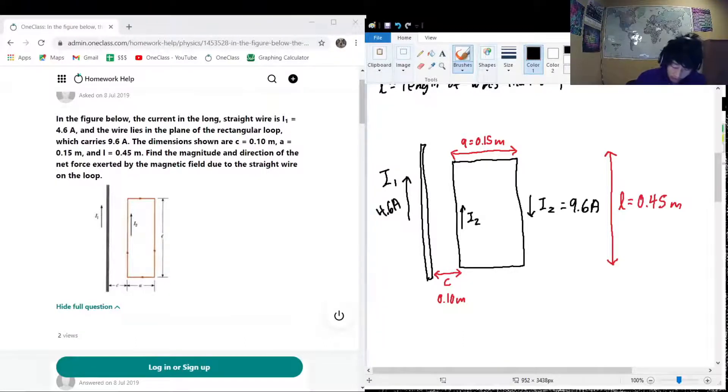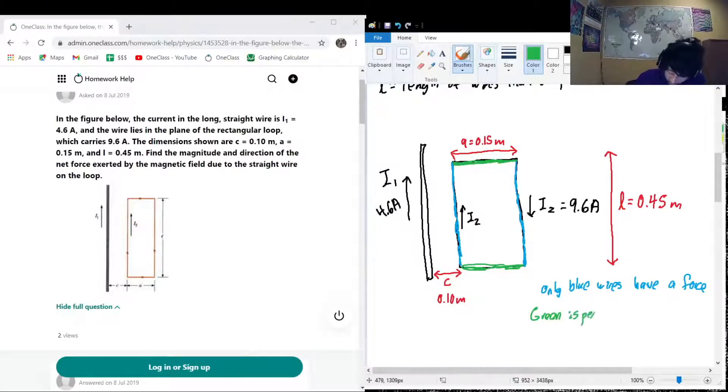So essentially, it is only this part and this part, only the two blue wires have a force. The green wires, or the green parts of the rectangle here, green is perpendicular, no force. So maybe we can call this section up and this section down, because that's the direction of the current.